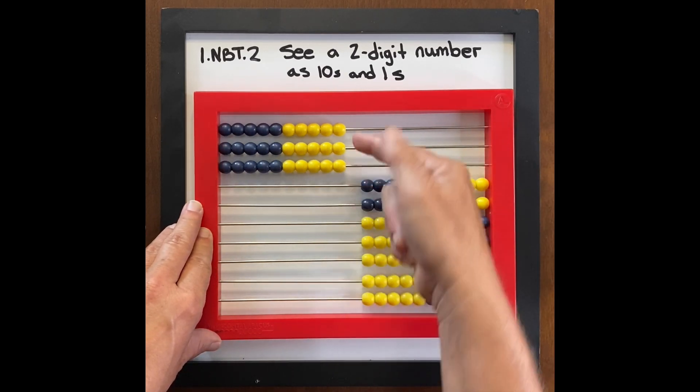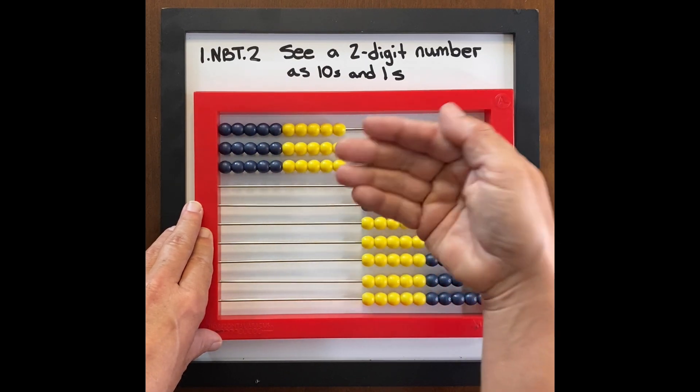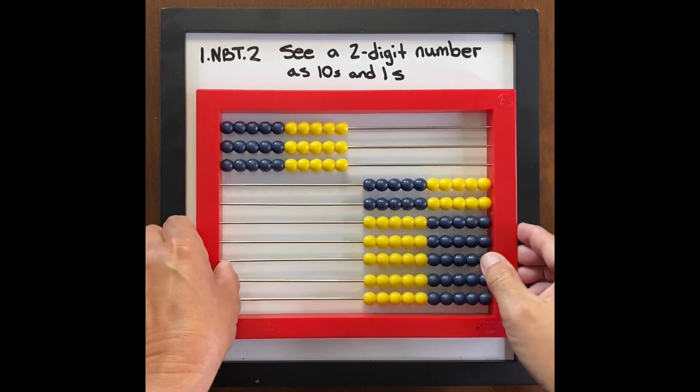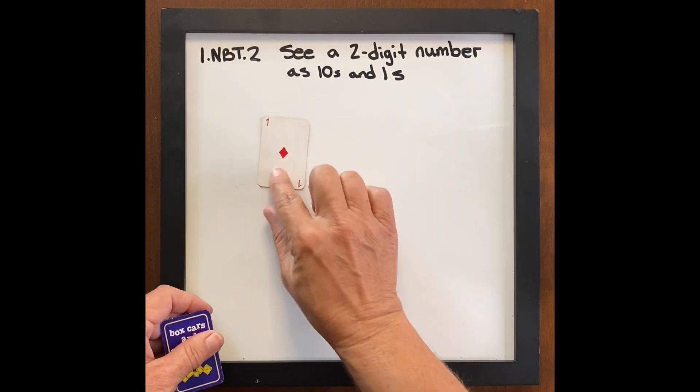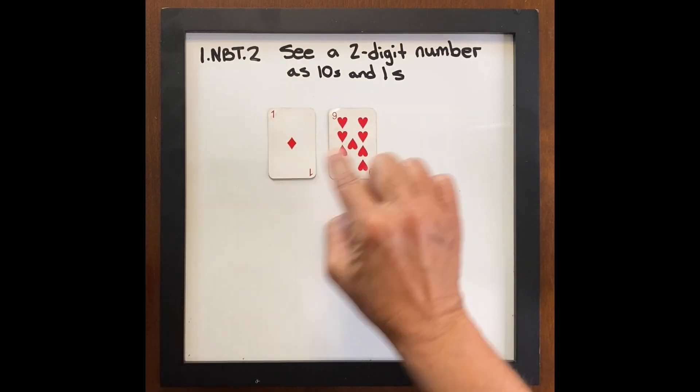Now we have three tens, and they can visually see that. So this step is really important before the next step. If I use playing cards and turn over, tell me what this number is, everybody. One ten nine.